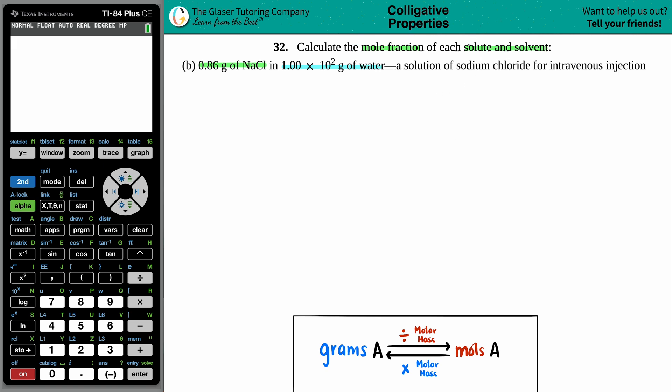In general, the solute is always the smaller amount. Generally, it's a solid that is being dunked into the solvent, which is the liquid media. And together, you make one big happy solution.